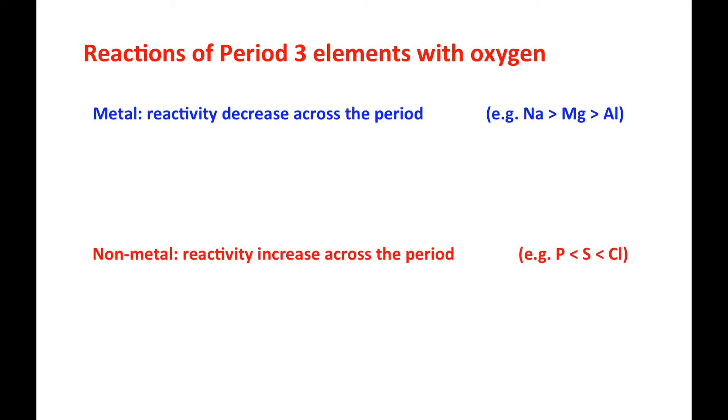The reactivity decreases across the period in period 3 as you have already learned. Sodium has the highest reactivity and aluminum the lowest. But for non-metals, the reactivity increases across the period.